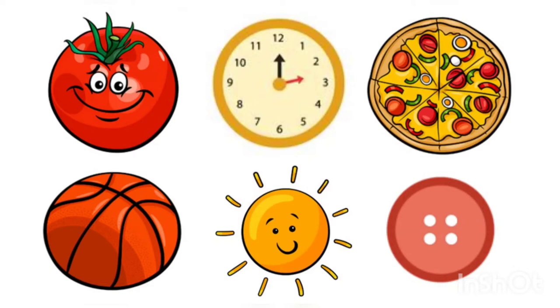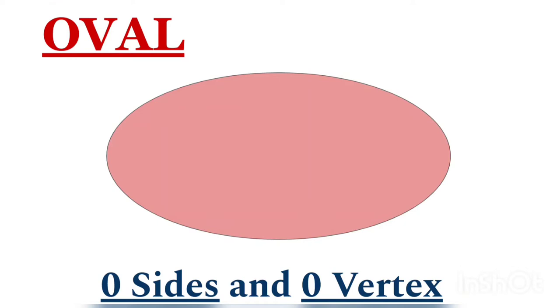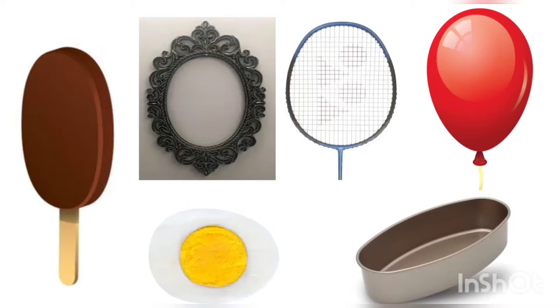Oval. This is oval shape. It has zero sides and zero vertex. These are examples of oval shape: ice cream, mirror frame, egg, badminton balloon, and cake tin.